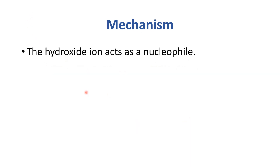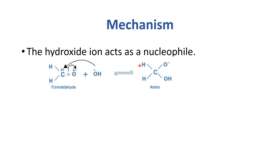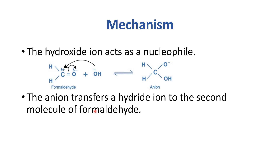Here we have the mechanism. The hydroxide ion from sodium hydroxide acts as a nucleophile and attacks the carbonyl carbon, forming an anion. In the next step, this anion transfers a hydride ion to the second molecule of formaldehyde.